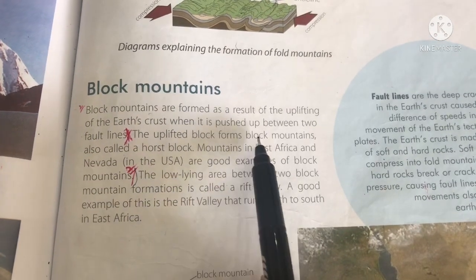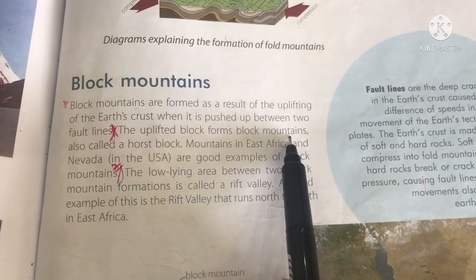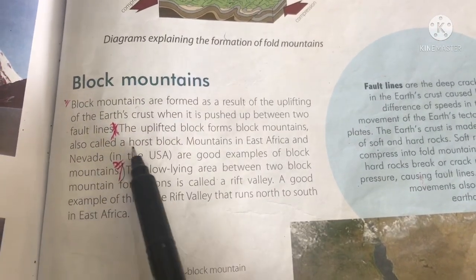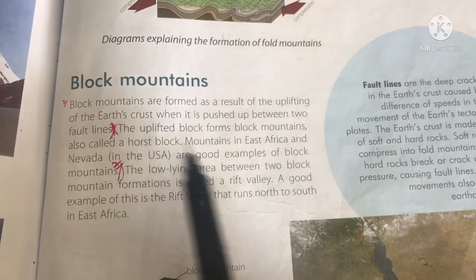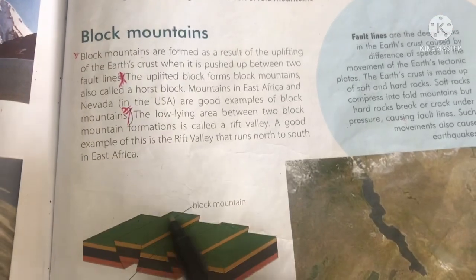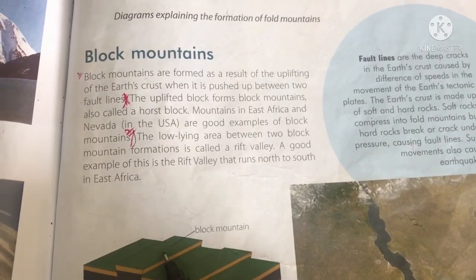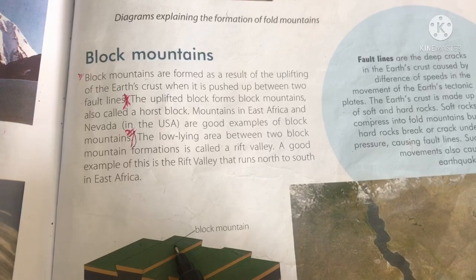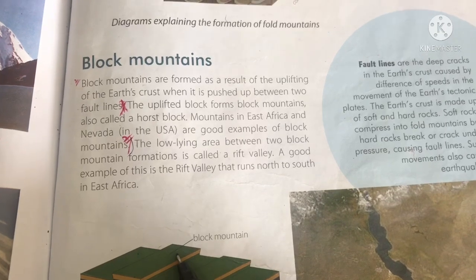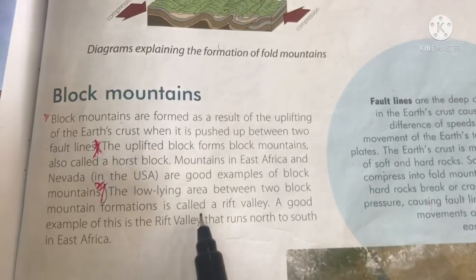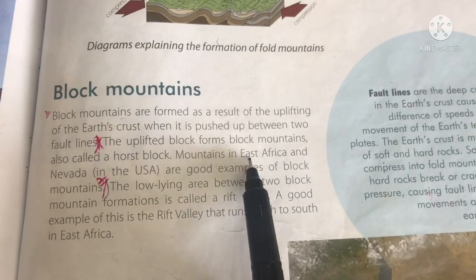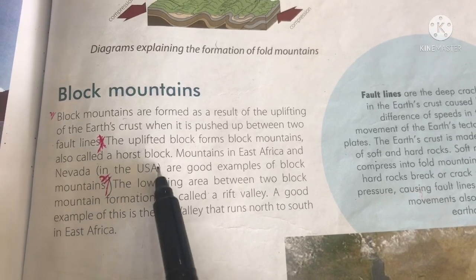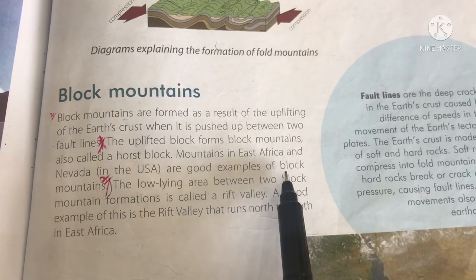The uplifted block forms block mountains, also called a horse block. Mountains in East Africa and Nevada in the USA are good examples of block mountains.